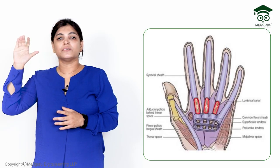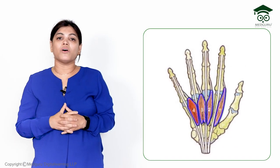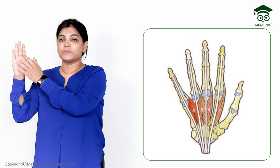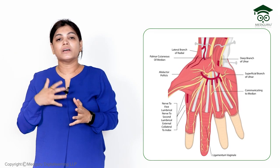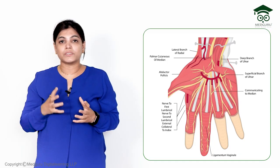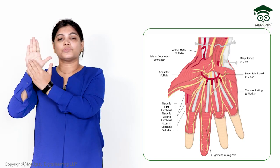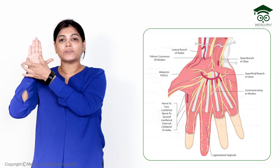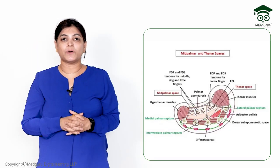Specifically, the medial three flexor tendons are present. Also the lumbrical muscles — second, third, and fourth — are contents; only the first lumbrical is not included. Additionally, there are digital nerves and vessels for the medial three-and-a-half fingers. All the nerves and vessels lying on the medial part of the hand form the contents of the mid palmar space.